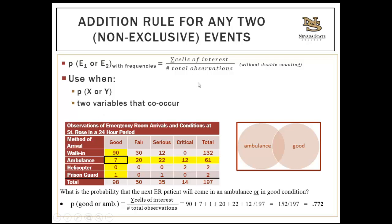Up until now, we focused on the probability of a single event. However, in the business world, situations rarely involve just one event — most times they involve two or more events that intersect. For example, a hospital may want to know how method of arrival and medical condition intersect. If you have two variables occurring simultaneously and see the word 'or,' you're probably dealing with the addition rule for two non-exclusive events.